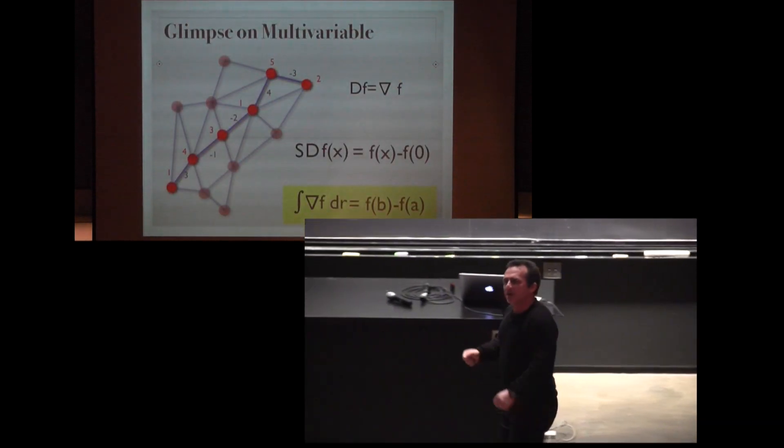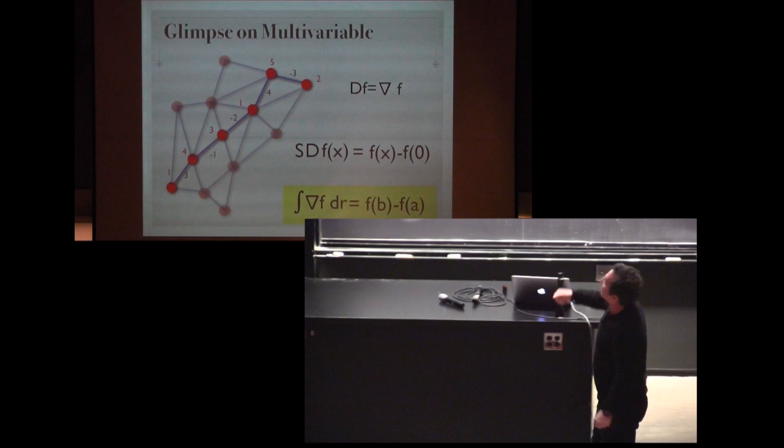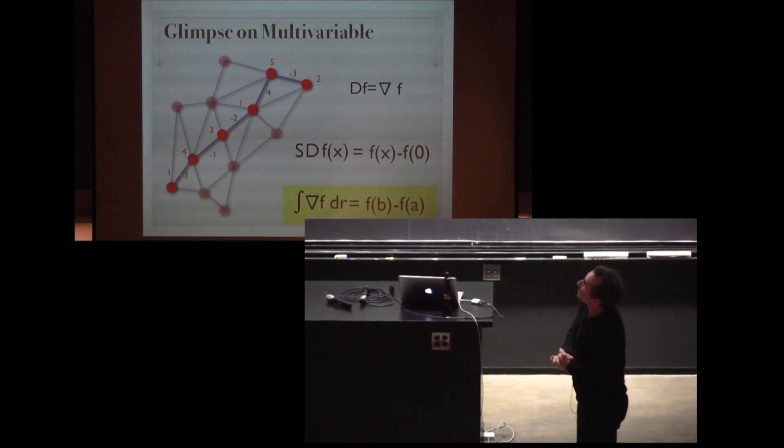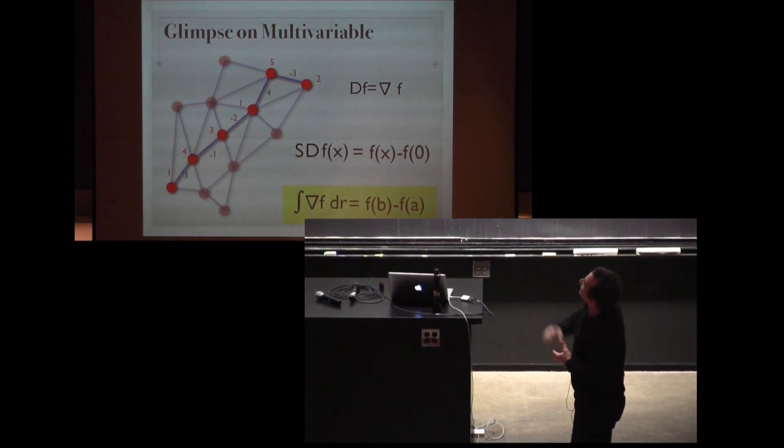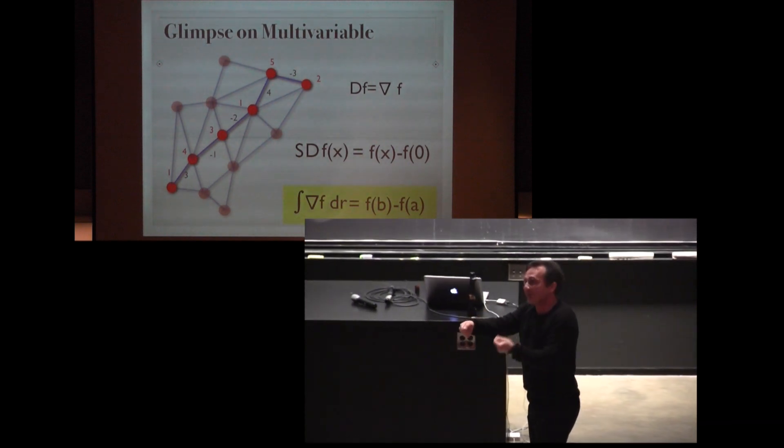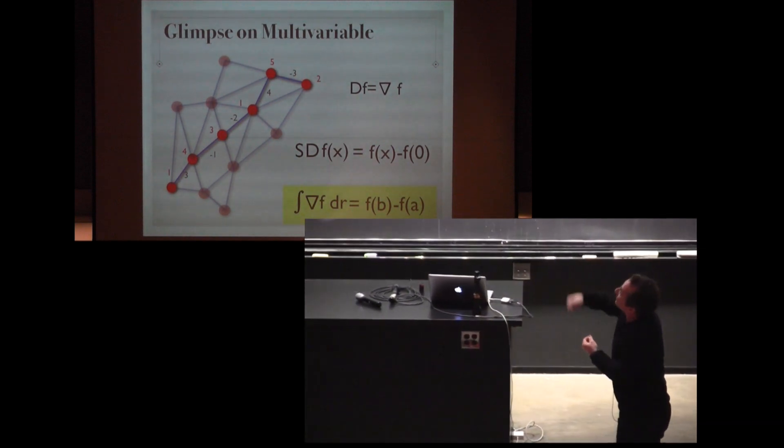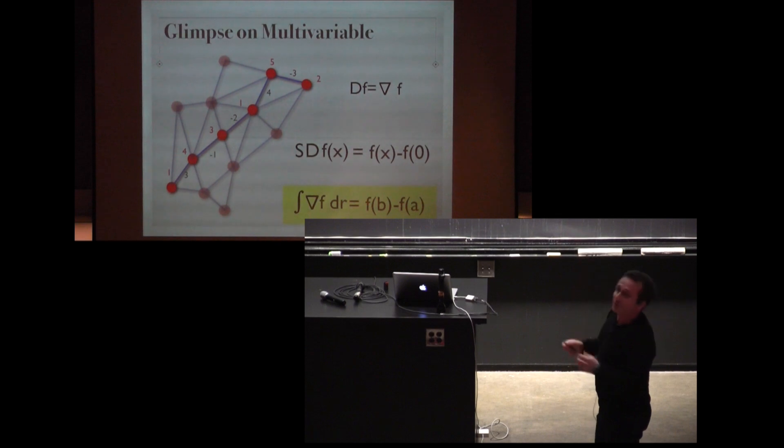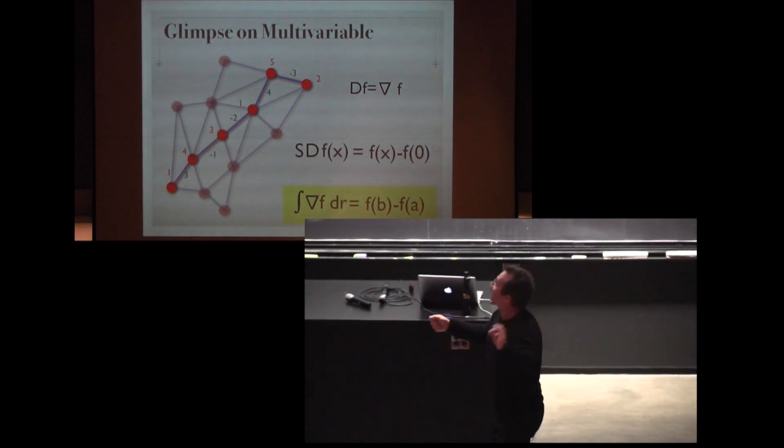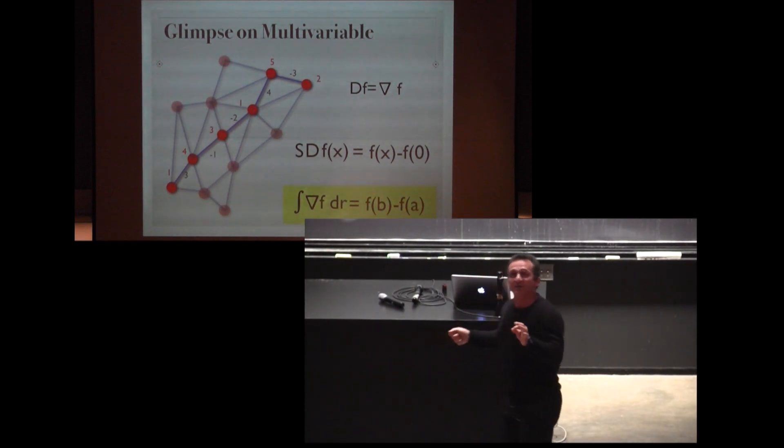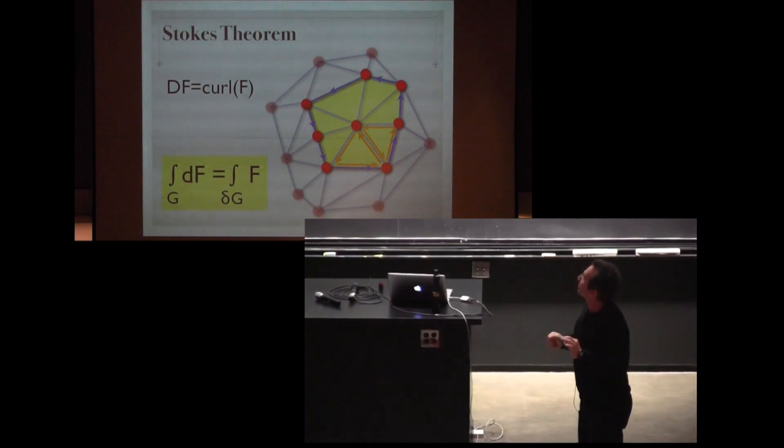Multivariable calculus. A scalar function is a function on the vertices of a graph. The vector field is a function on the edges of a graph. The gradient is the difference between the function values and if we add up the gradient along the curve we just have the boundary terms which survive. That's the fundamental theorem of line integrals and it's the same cancellation process we have seen.